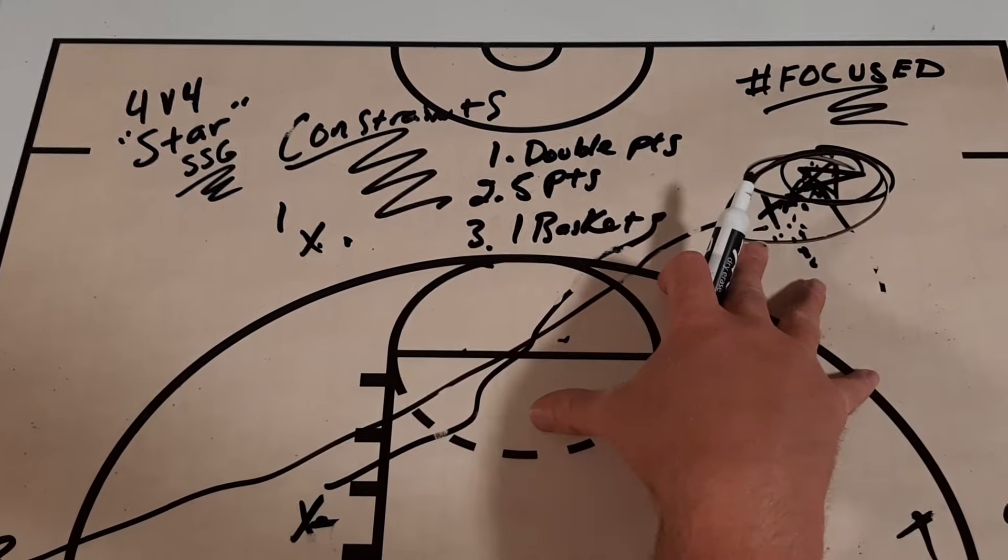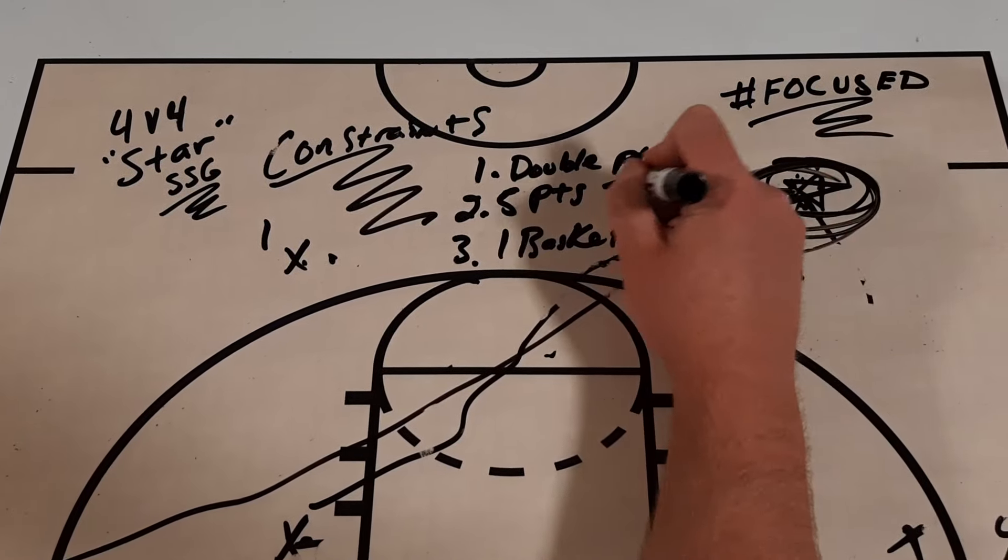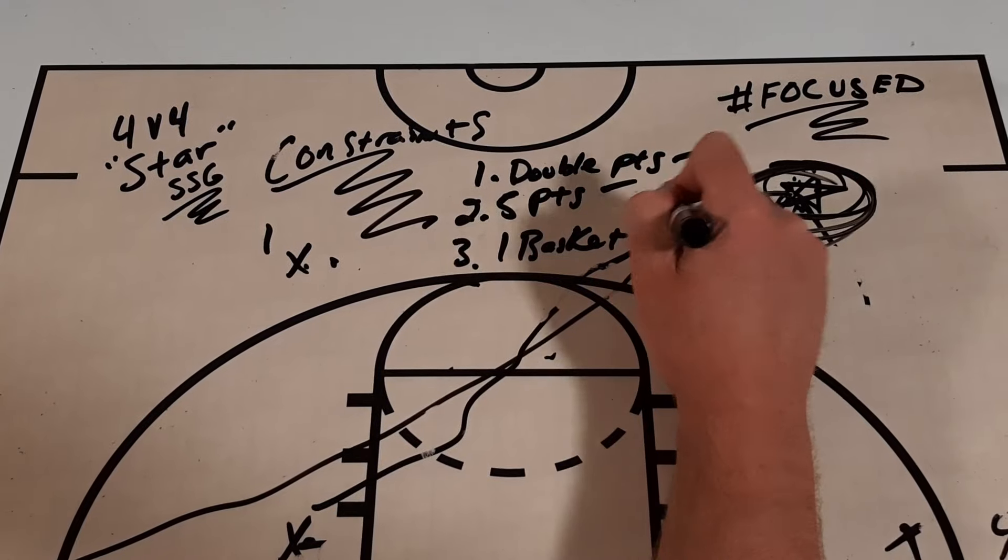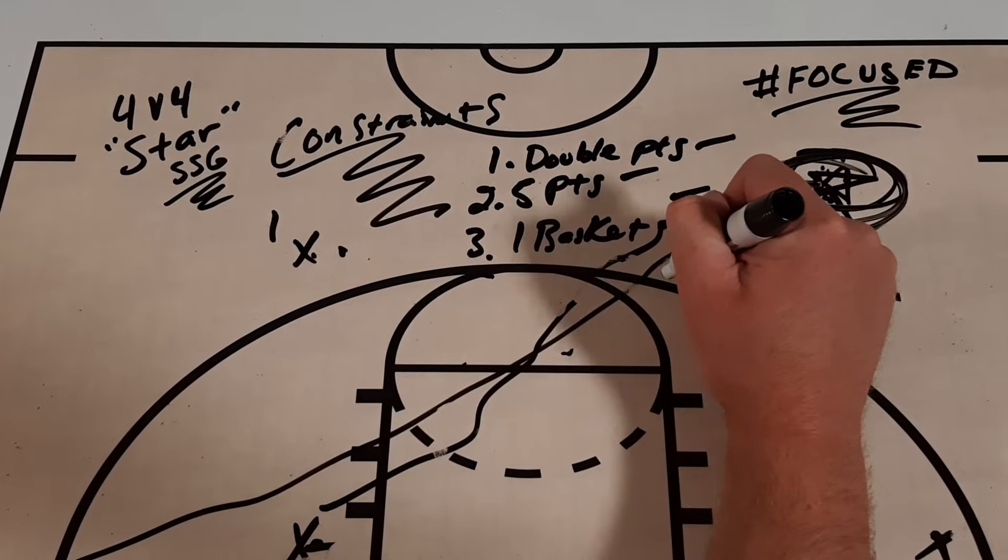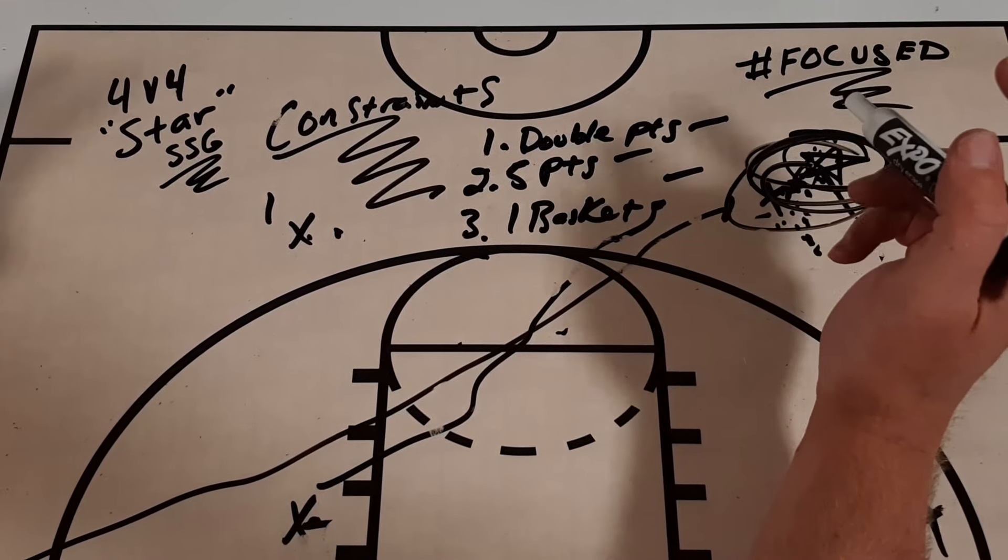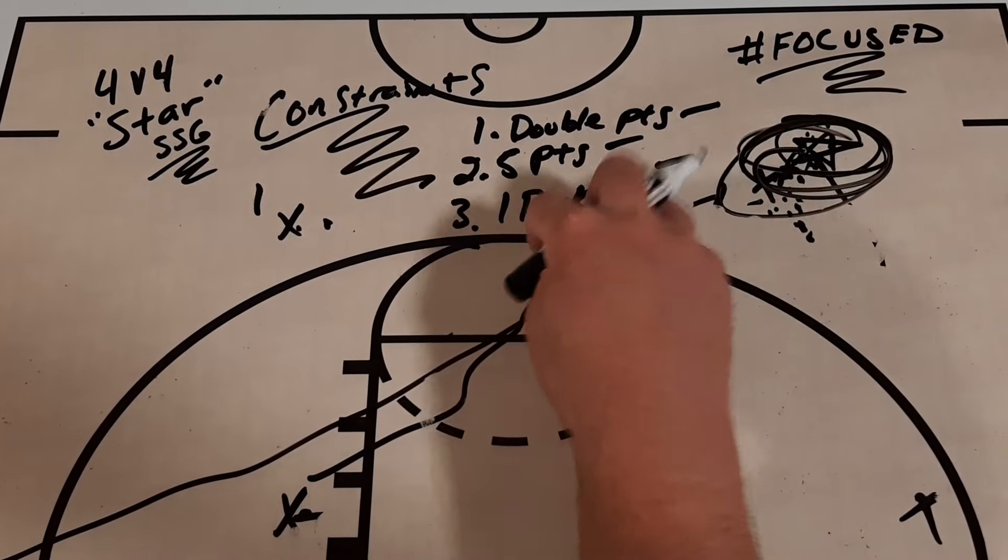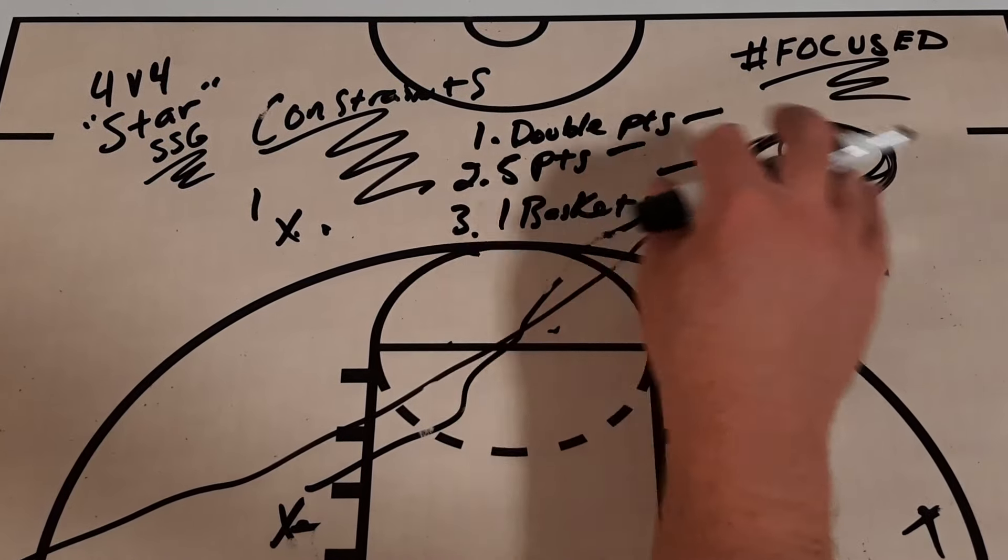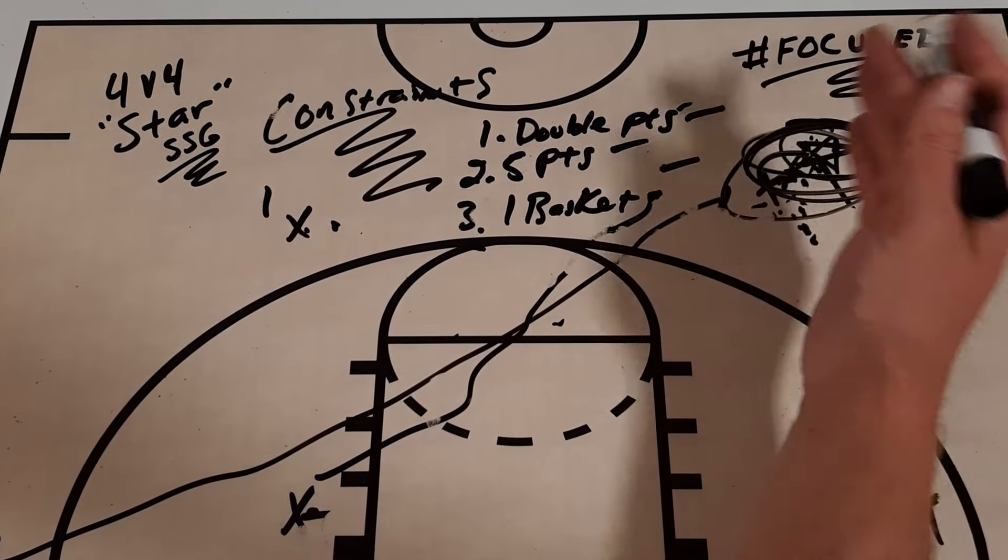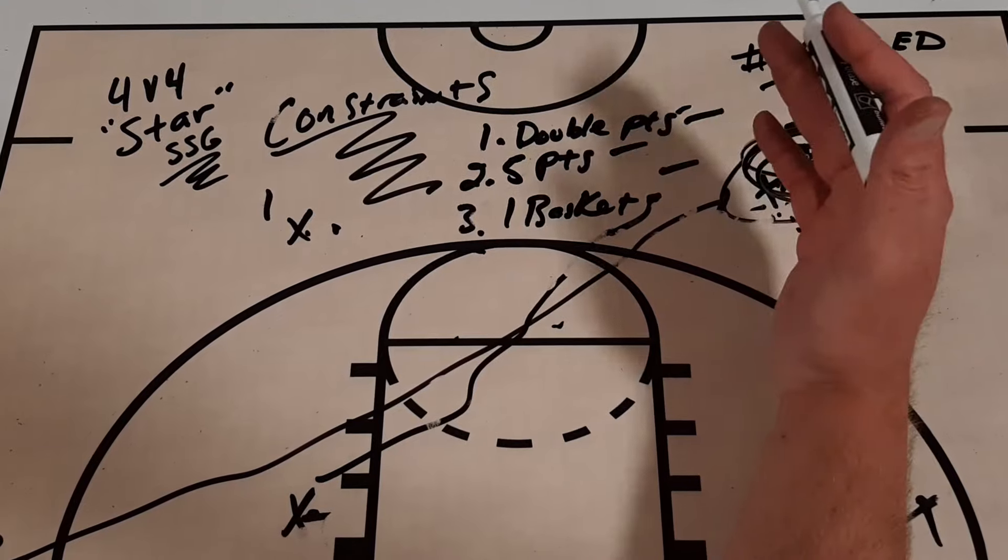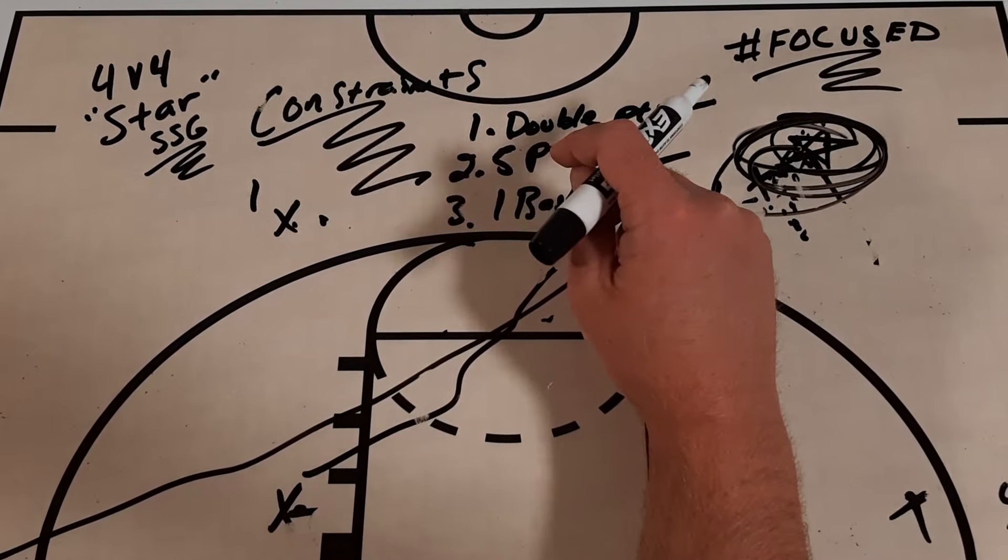But you also can play your base defense, your man-to-man. Or you could play your zone defense and still have this star player double points, five points, games to ten, however you want to do it. Or it could be that one basket. I've heard coaches say the golden child. I think it was Coach Shelangowski when he talked about this drill. He had a golden child on each team, and their points were double points, and he called it that.